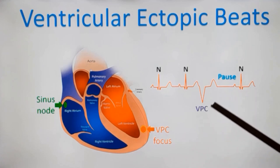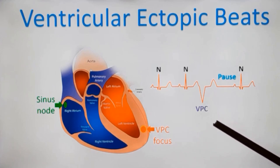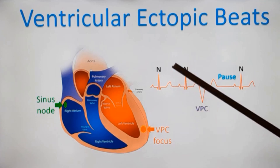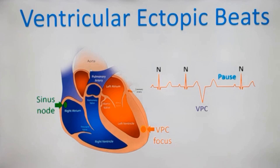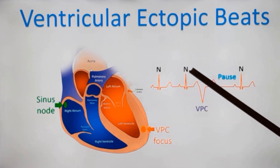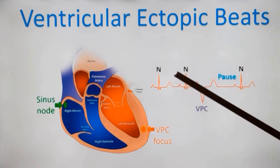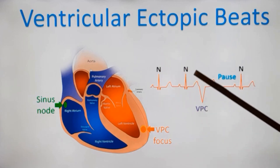Sometimes there may not be a compensatory pause. A particularly timed ventricular ectopic can occur exactly between two QRS complexes — then it is called an interpolated ventricular ectopic. There will be no change in the sinus rhythm. This usually occurs when the sinus rate is a little slow, so there is space for a ventricular ectopic to occur without disturbing the regular sinus rhythm.